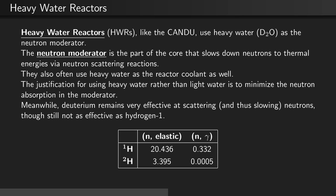In this table, we can see that H1's elastic scattering cross-section is about 20 barns, while deuterium or H2's cross-section for scattering is somewhat less at 3 barns. However, the absorption gamma cross-section for H1 is about 0.3 barns, while H2's absorption cross-section is much, much less at 0.0005 barns.